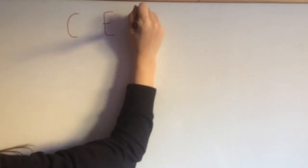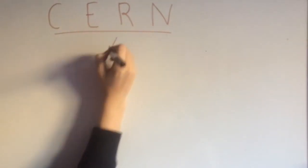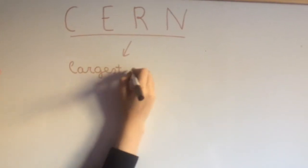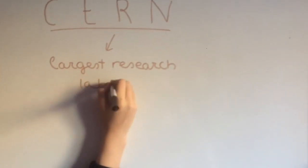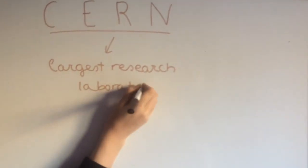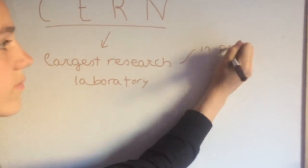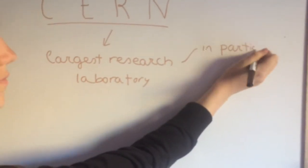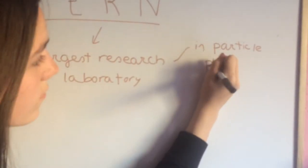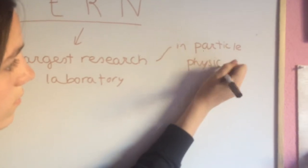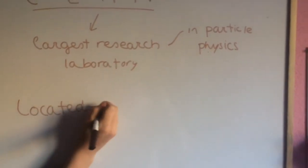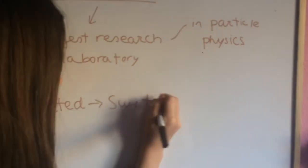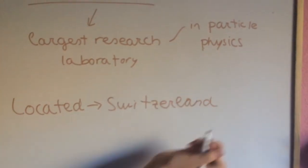The European Organization for Nuclear Research, the official name, commonly known by the acronym CERN, is the largest research laboratory in particle physics in the world. It is located in Switzerland, near the border with France, between the commune of Saint-Génier-Pauly and the commune of Merlin.